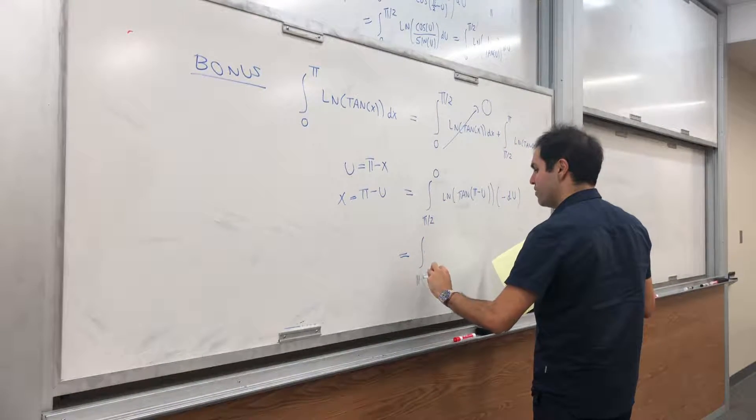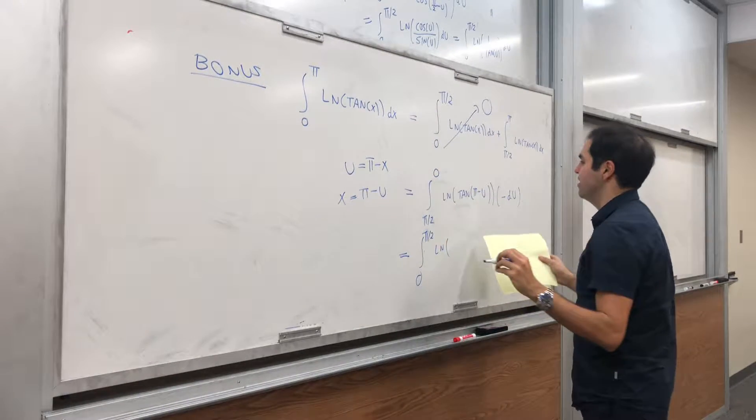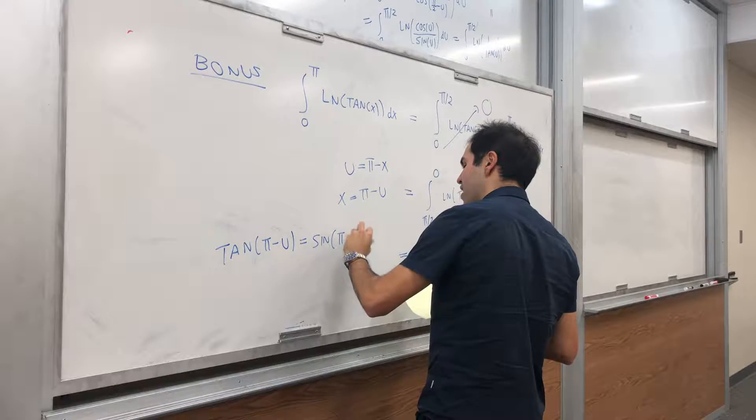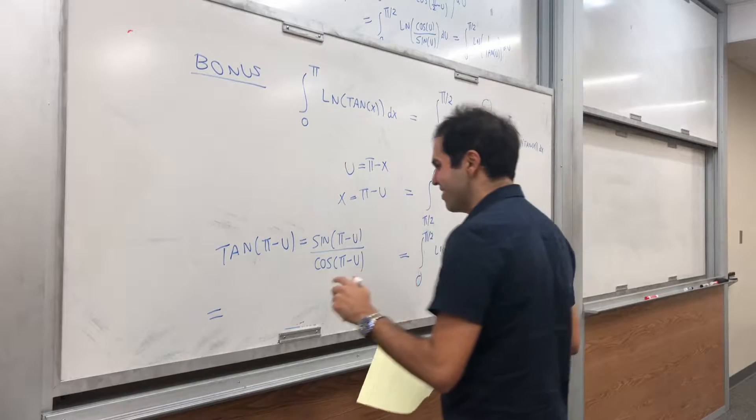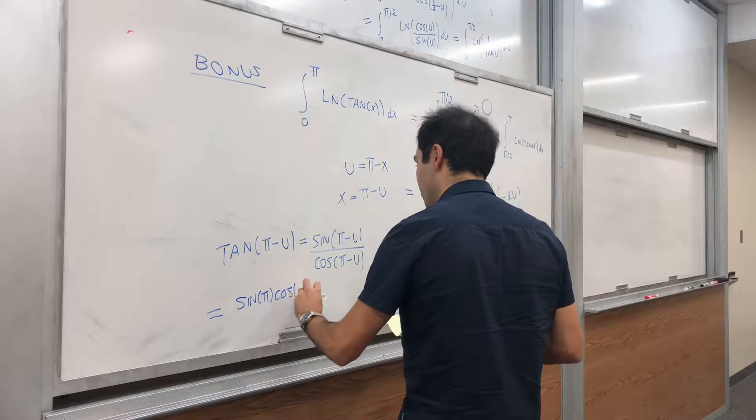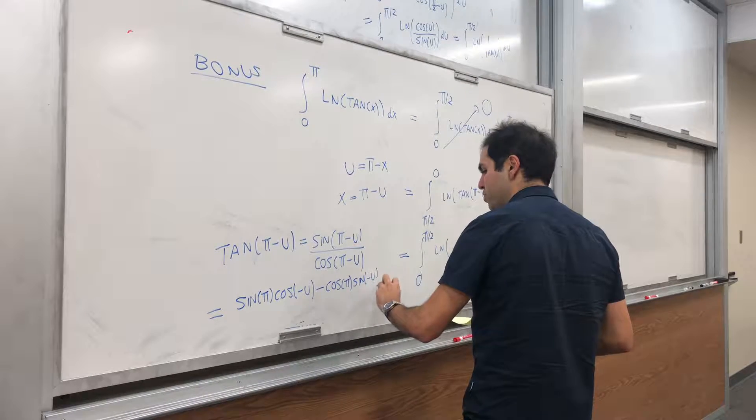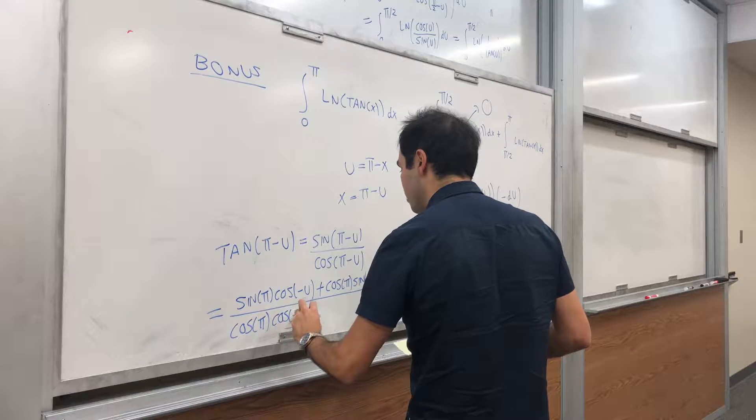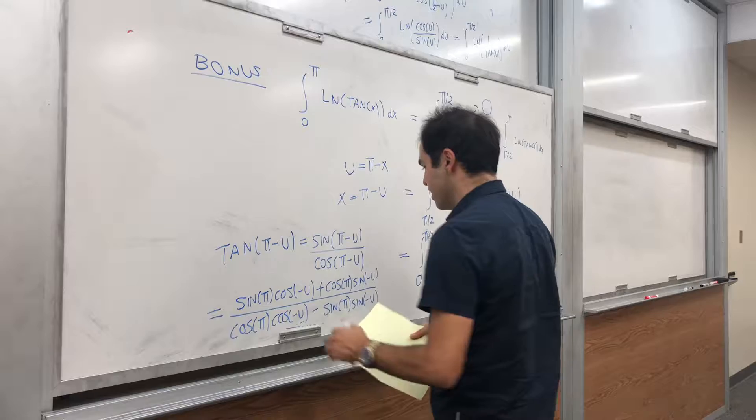So it's integral from 0 to π over 2, ln of tangent of π minus u. Well, that's sine of π minus u over cosine of π minus u, and I always forget those identities, so let's just use the sum formula, so it's sine of π cosine of minus u plus cosine π cosine of minus u over cosine π cosine minus u minus sine π sine of minus u. Well, sine of π is 0, so this disappears.